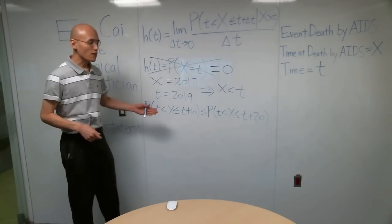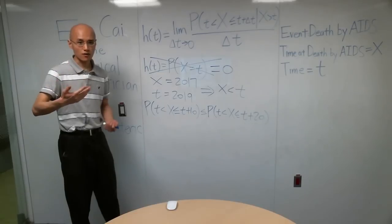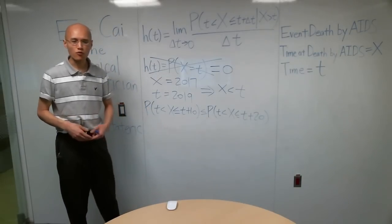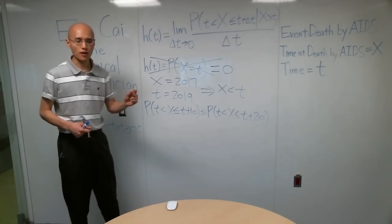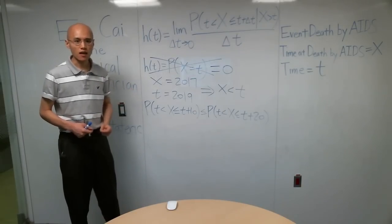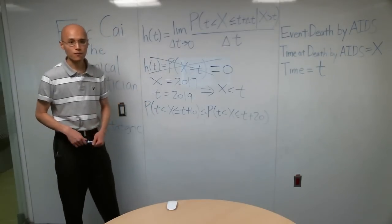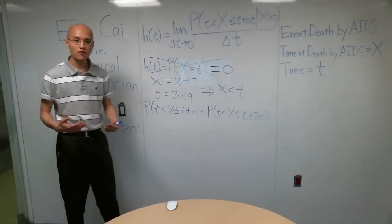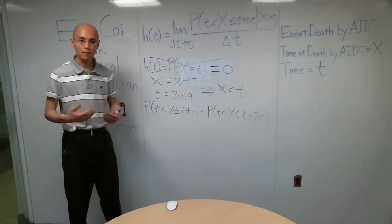So this definition artificially inflates the hazard if we're considering a larger delta T, which is really not useful. What we really care about at the end of the day is the intrinsic risk of dying by AIDS, and we don't want that to get bigger just because delta T is getting bigger. So we have to adjust for that somehow, and to adjust for that, we divide by delta T.